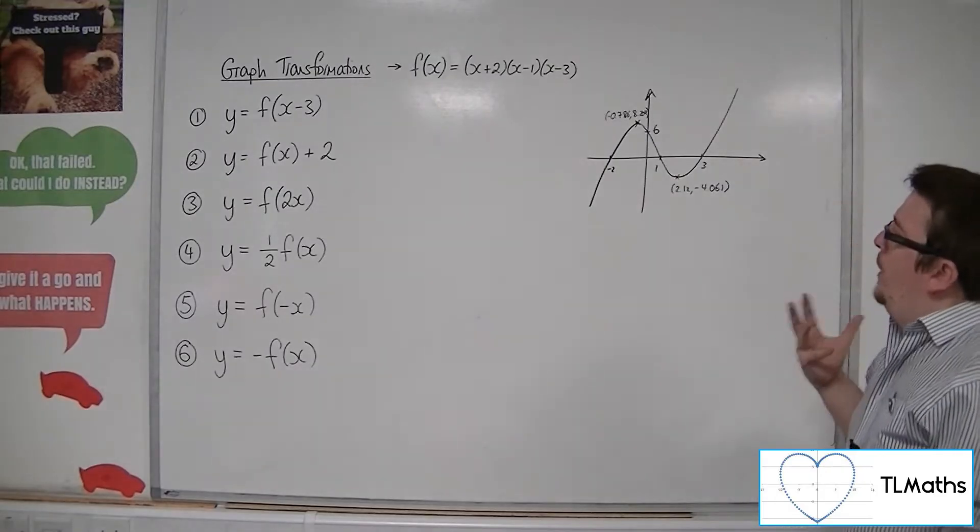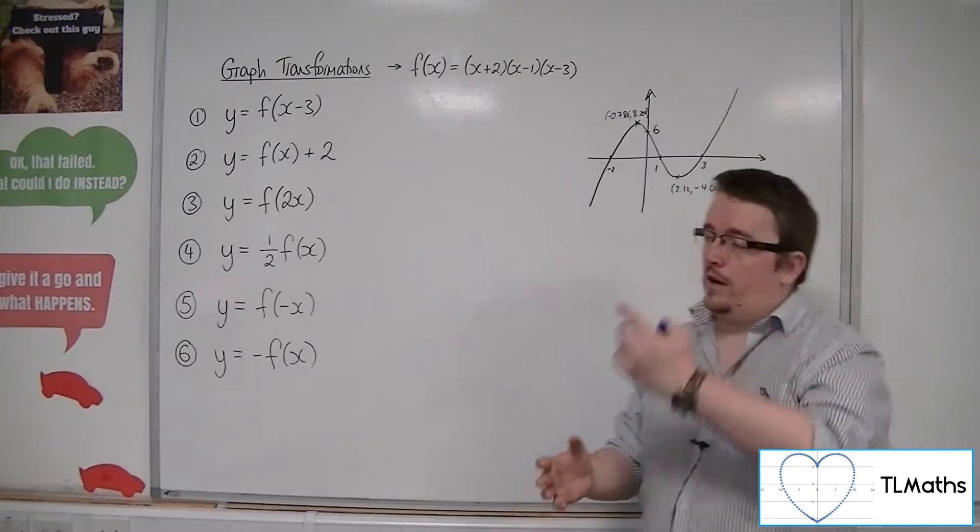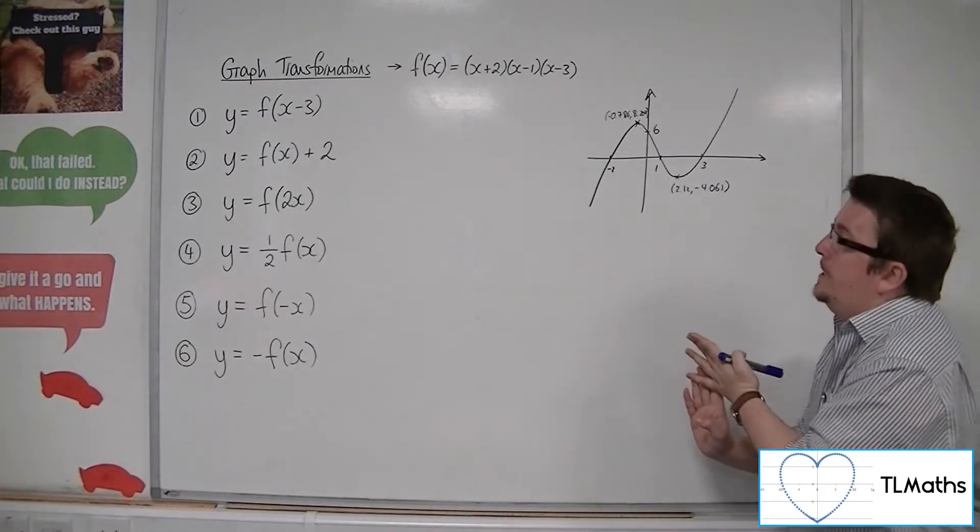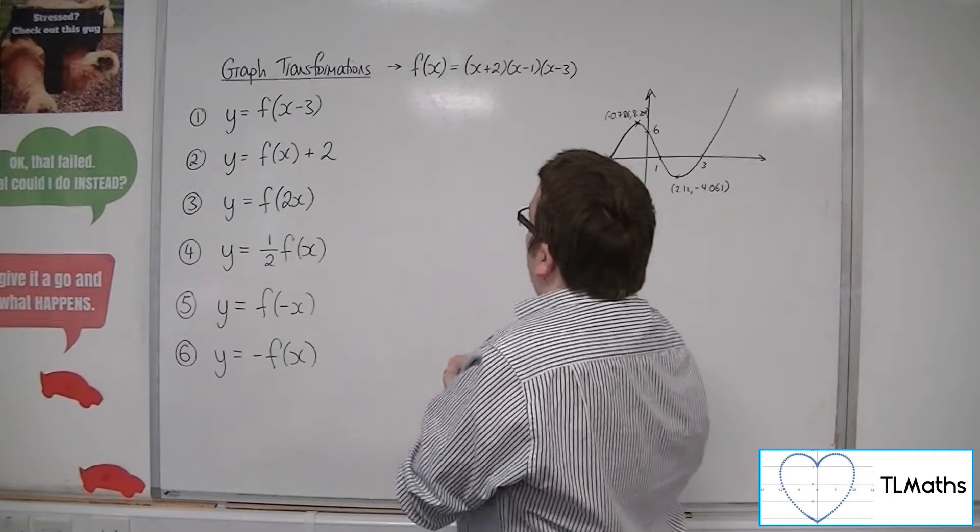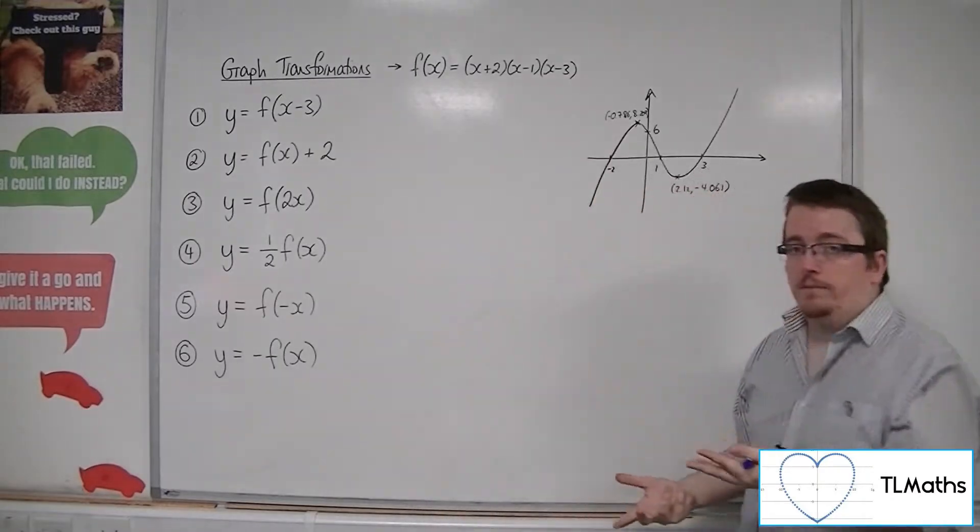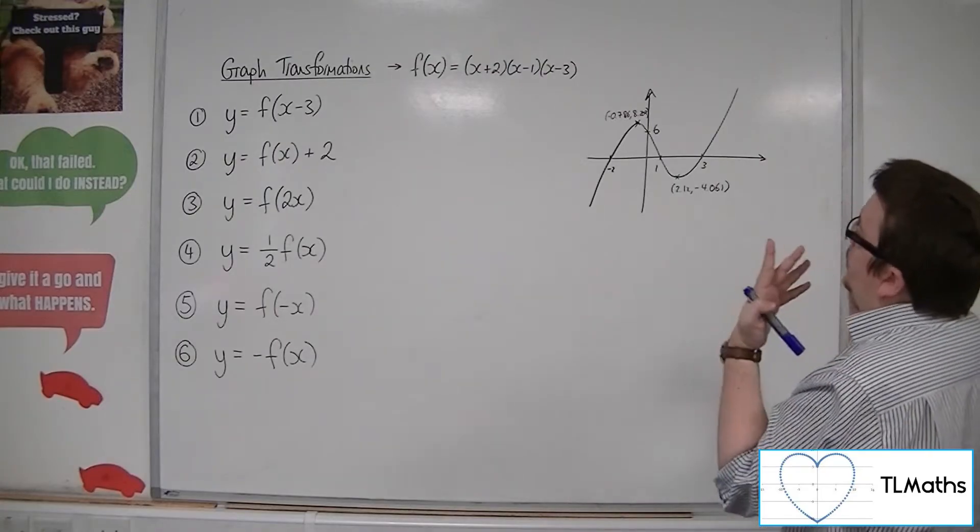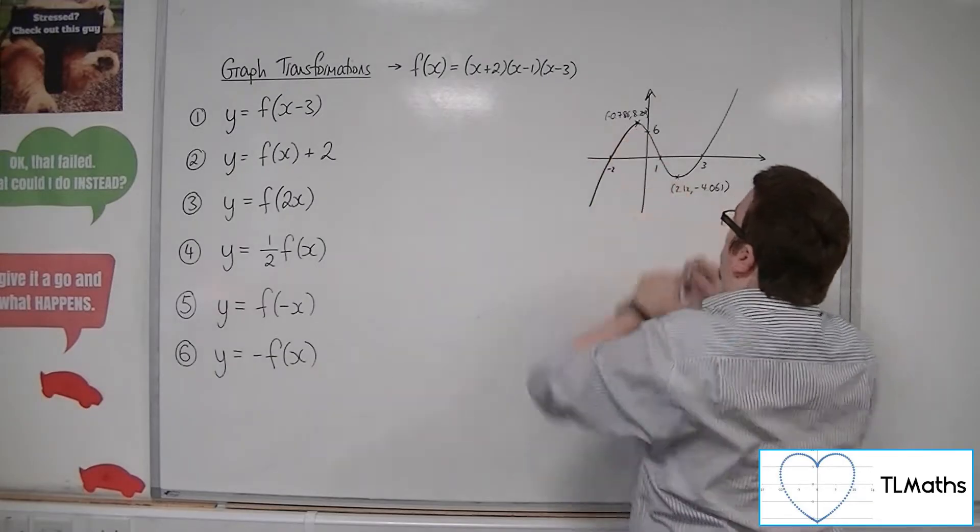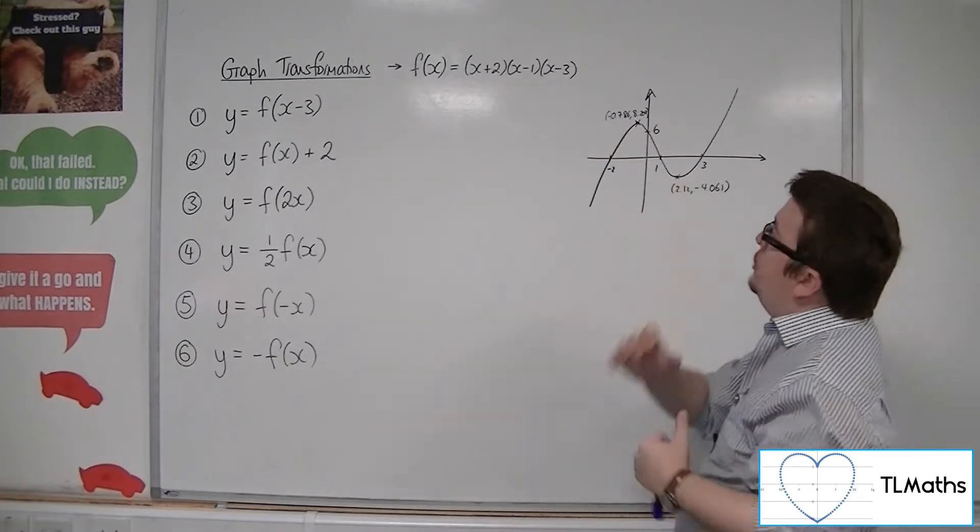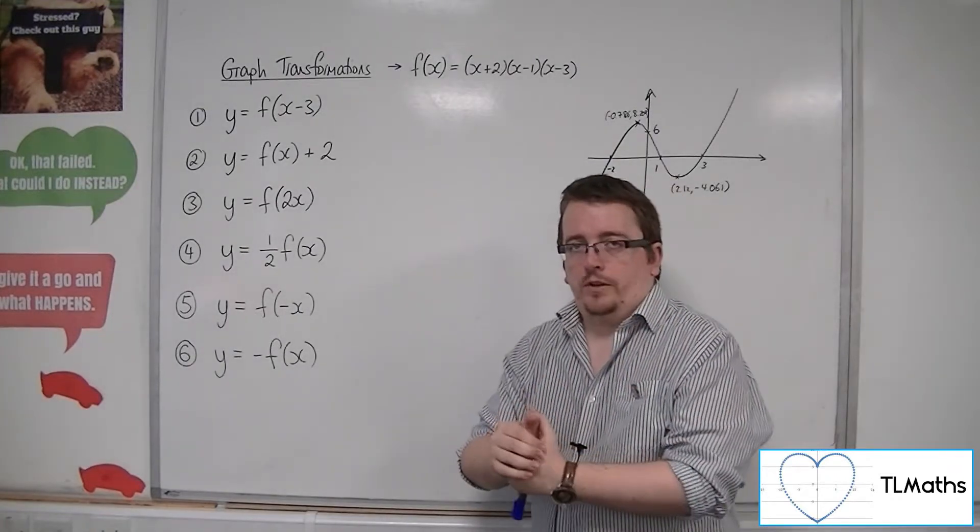If you had to actually calculate where those turning points were, you would have to know differentiation. You would have to expand these brackets out, you would have to differentiate, you would get a quadratic, you would put that equal to 0, you would solve that quadratic and that would give you the x-coordinates of these points.